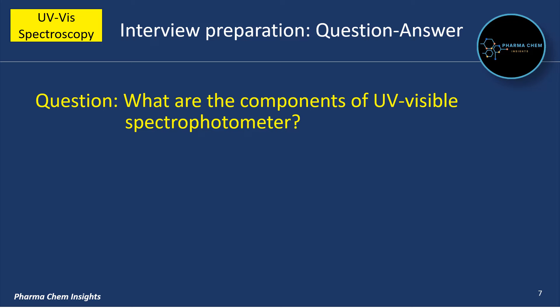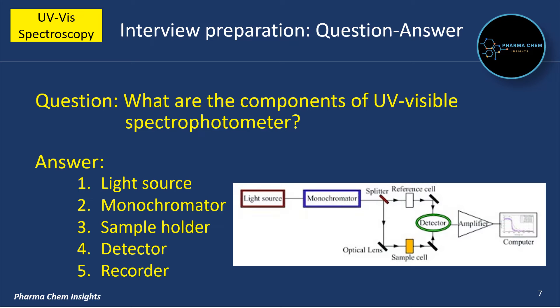What are the components of a UV visible spectrophotometer? There are five components: light source, monochromator, sample holder, detector, and recorder.